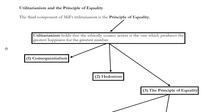But still at this point you might be left with a further question. Let's say you accept consequentialism and you accept hedonism — what you're supposed to do is produce as much happiness as you can into the world. Well, happiness for whom? Happiness for yourself? Happiness for your friends and family? Maybe the people in your city, your state, your country? Human beings? All sentient beings? Whose happiness am I supposed to concern myself with?